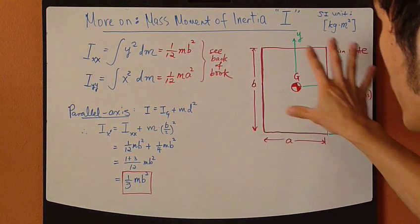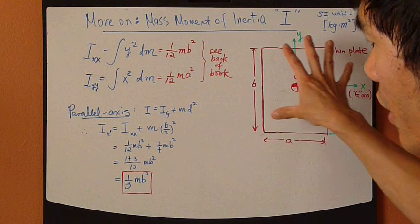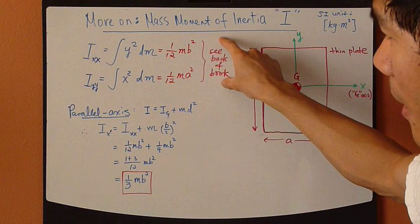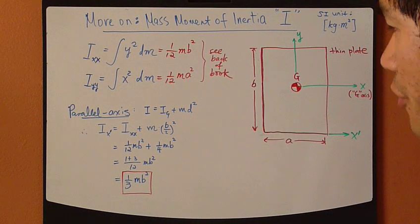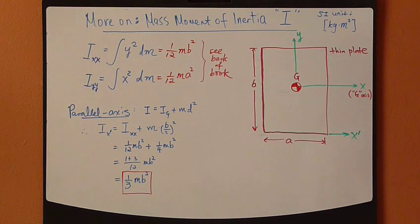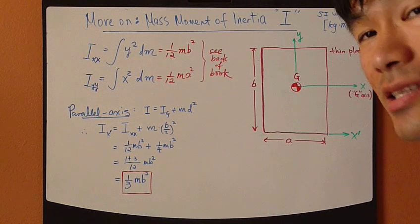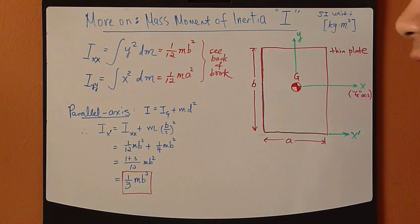And there are some common shapes and they're listed in the back of the book. So you can refer to the table for things like a thin wire, a disc, and other common shapes.